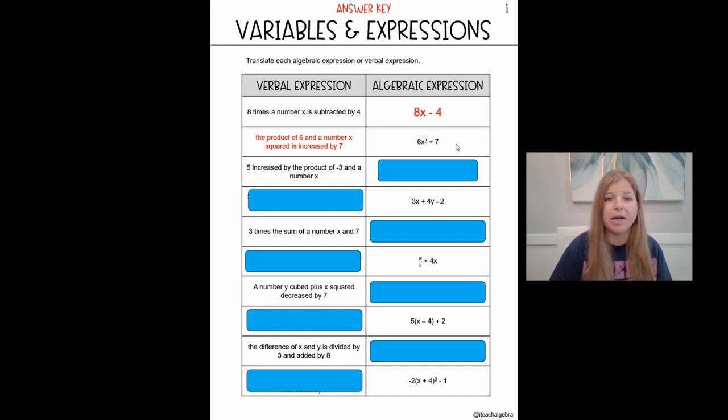Next one. 5 increased by the product of negative 3 and a number x. So I know 5 increased means add. We saw that in the previous problem. The product of negative 3 and a number x means multiplication. They're side by side, and we don't need a multiplication x or a raised dot. And so I would be able to write it like this. 5 minus 3x.